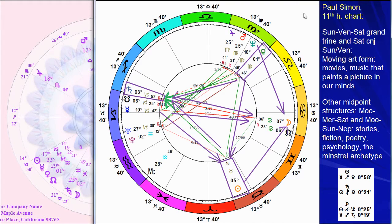If we look at his 11th harmonic pattern, look at all the midpoints — midpoints all over the place. He has a grand trine — all in early Earth signs: Venus at 1 Virgo, Saturn at 3 Capricorn, Sun at 5 Taurus. Saturn at Sun-Venus in the 11th harmonic means forming and getting to the structure and design of the music. He paints pictures — it's like a moving painting because it's the 11th harmonic, it's moving. Venus-Saturn-Sun is creating the structure and the design. He creates the melody line, the harmony lines, and captures it. It's like a moving painting. He would be great for creating background music to movies — his music paints pictures and stories. Sun-Venus-Saturn, Grand Trine in the 11th harmonic.